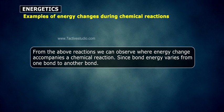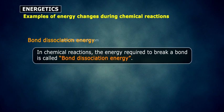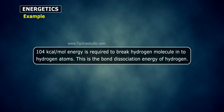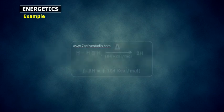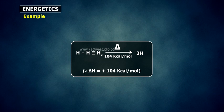Since bond energy varies from one bond to another bond. Bond dissociation energy: In chemical reactions, the energy required to break a bond is called bond dissociation energy. For example, 104 kcal per mole of energy is required to break a hydrogen molecule into hydrogen atoms. This is the bond dissociation energy of hydrogen: H₂ → 2H, ΔH = +104 kcal/mol.